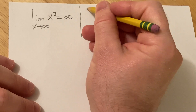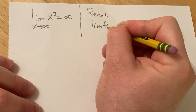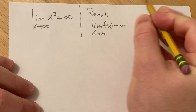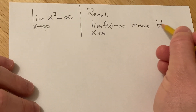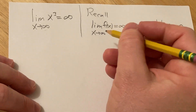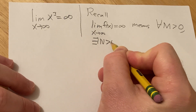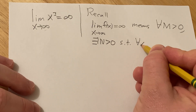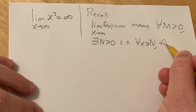So what is the definition? Recall, if you have the limit of f of x as x approaches infinity and that's equal to infinity, this means that for every positive number — for all m greater than zero, no matter how big — we can find a positive number n, and there exists an n greater than zero, such that whenever we have an x bigger than n, f of x is bigger than m.